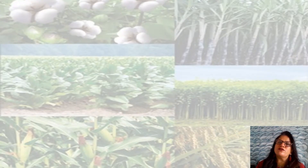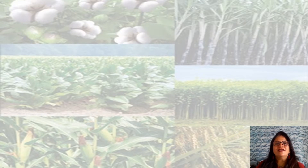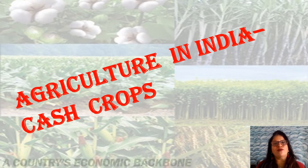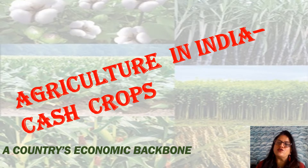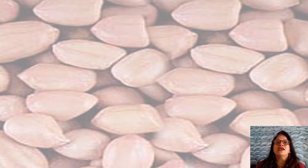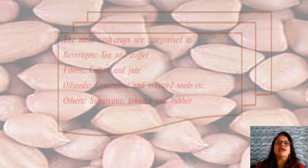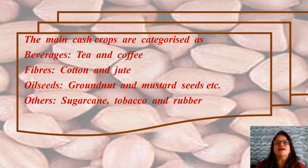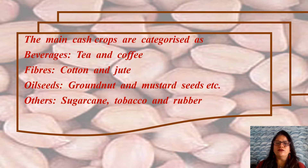Hello, I'm back with the geography chapter on agriculture in India. This time we will talk about cash crops, which are referred to as a country's backbone. Cash crops provide raw material to agro-based industries and provide money to farmers to improve their living conditions and farming practices. The main cash crops are categorized as beverages — tea and coffee — fiber crops like cotton and jute, and oil seeds such as groundnuts and mustard.